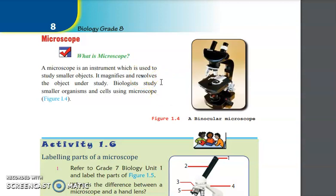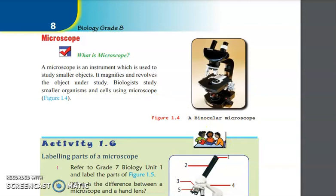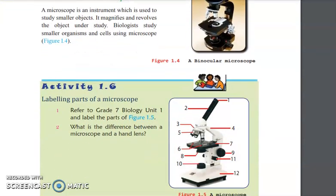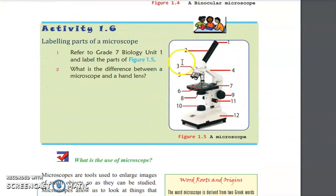The other function helps us distinguish between two points. Biologists study smaller organisms and cells using microscopes. These are parts of a microscope - make sure to check them out.